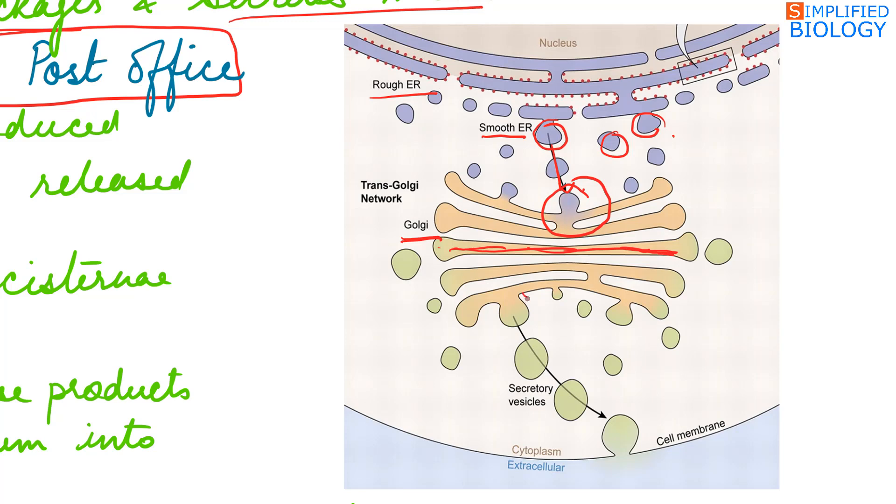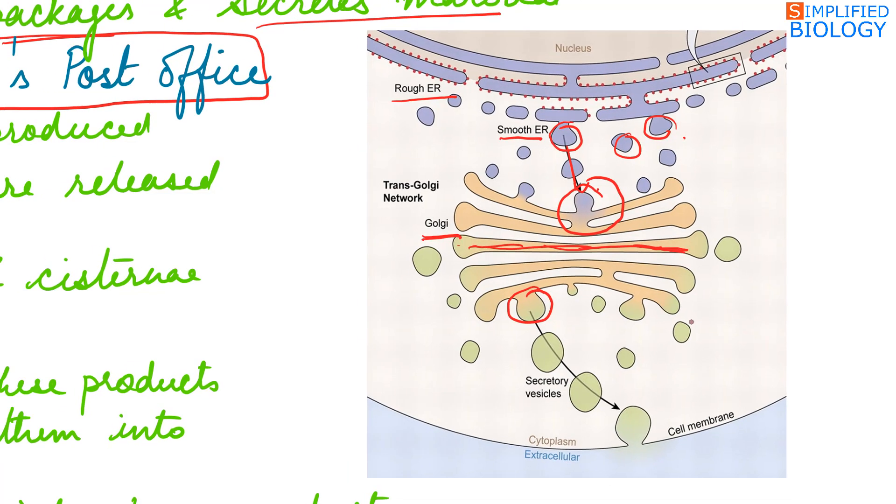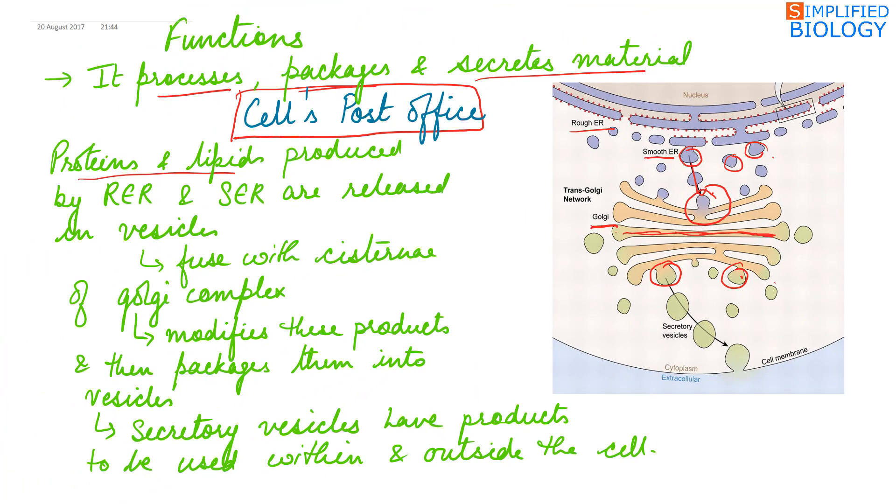They are packaged and then released as vesicles. The vesicles produced have secretory products. These secretory vesicles have products that can be used within the cell and outside the cell.